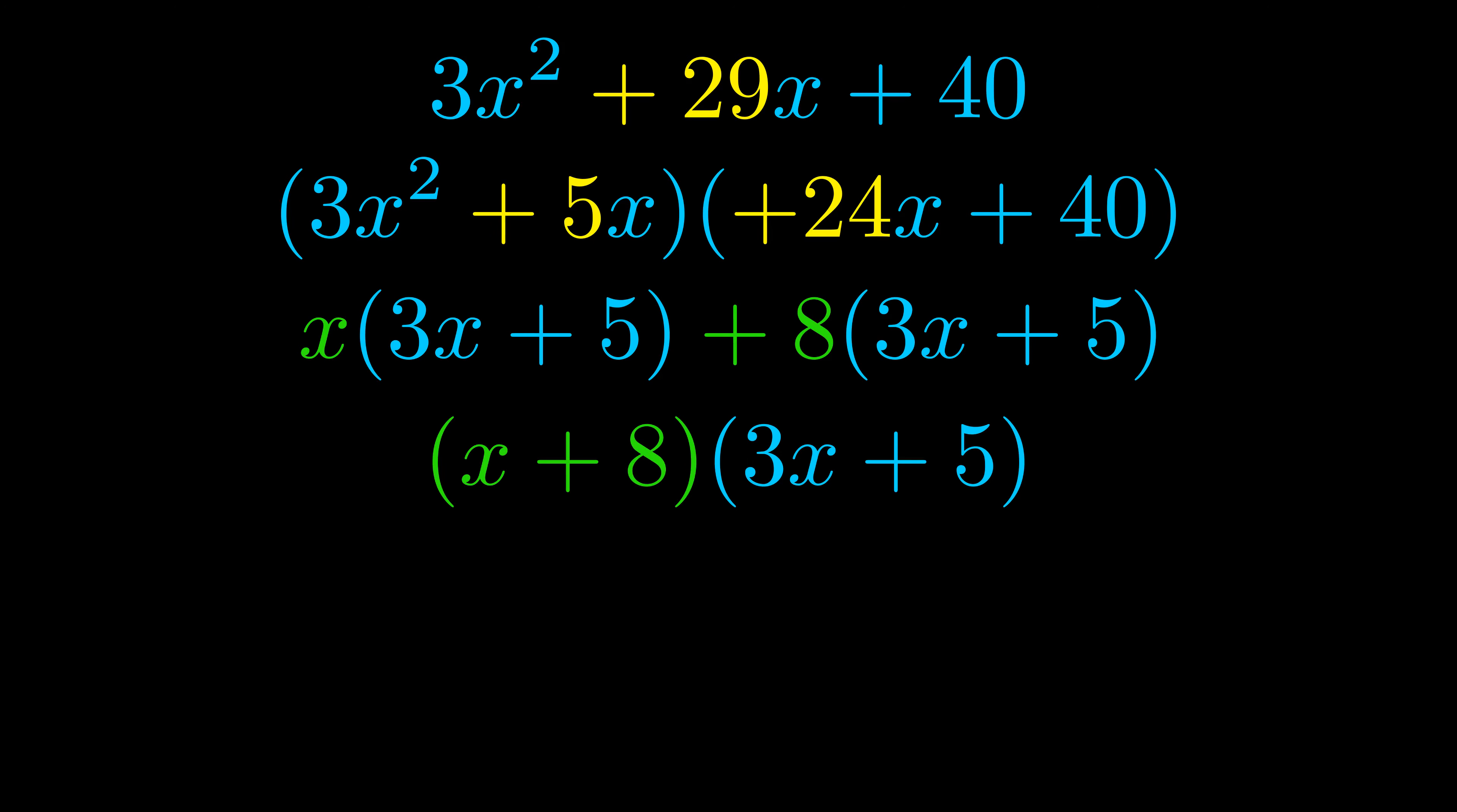The blue values are the same. Those blue values will become one of our factors and we will combine the two green values, the GCFs that we pulled out, to get the other one. And that is our fully factored equation.